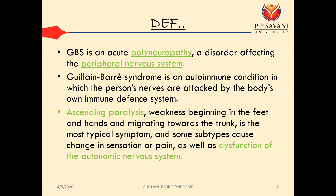GBS is acute polyneuropathy, a disorder affecting the peripheral nervous system. Guillain-Barré syndrome is an autoimmune condition in which the person's nerves are attacked by the body's own immune defense system. Ascending paralysis — weakness begins in the feet and hands and migrates towards the trunk — is the most typical symptom, and it sometimes causes changes in sensation or pain, as well as dysfunction of the autonomic nervous system.